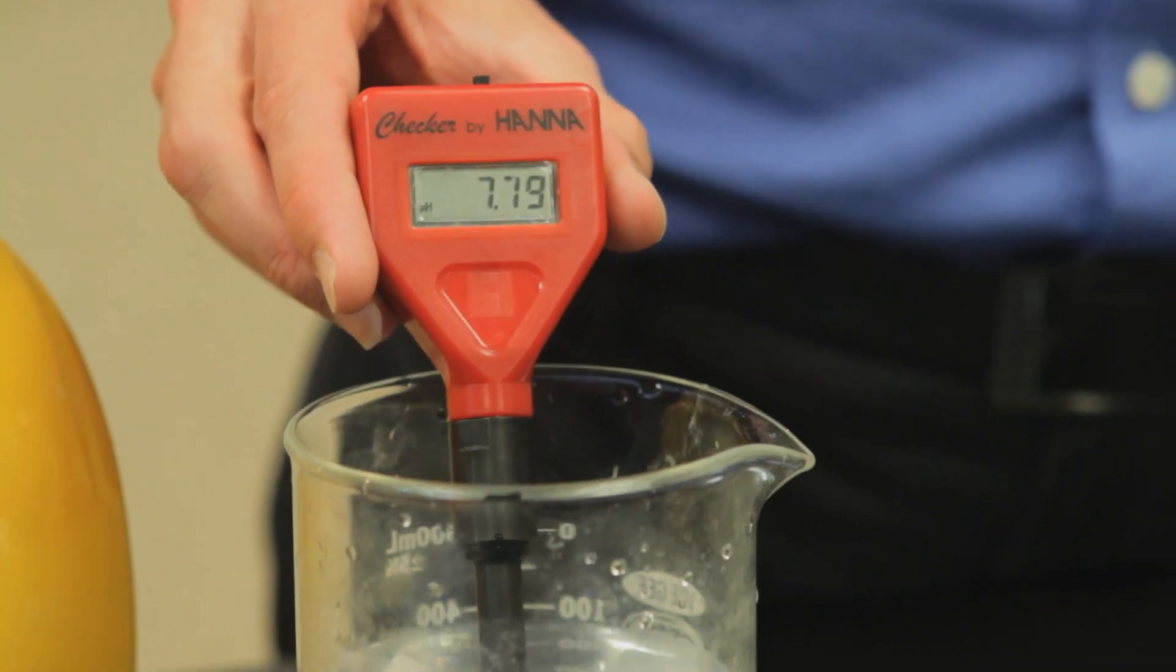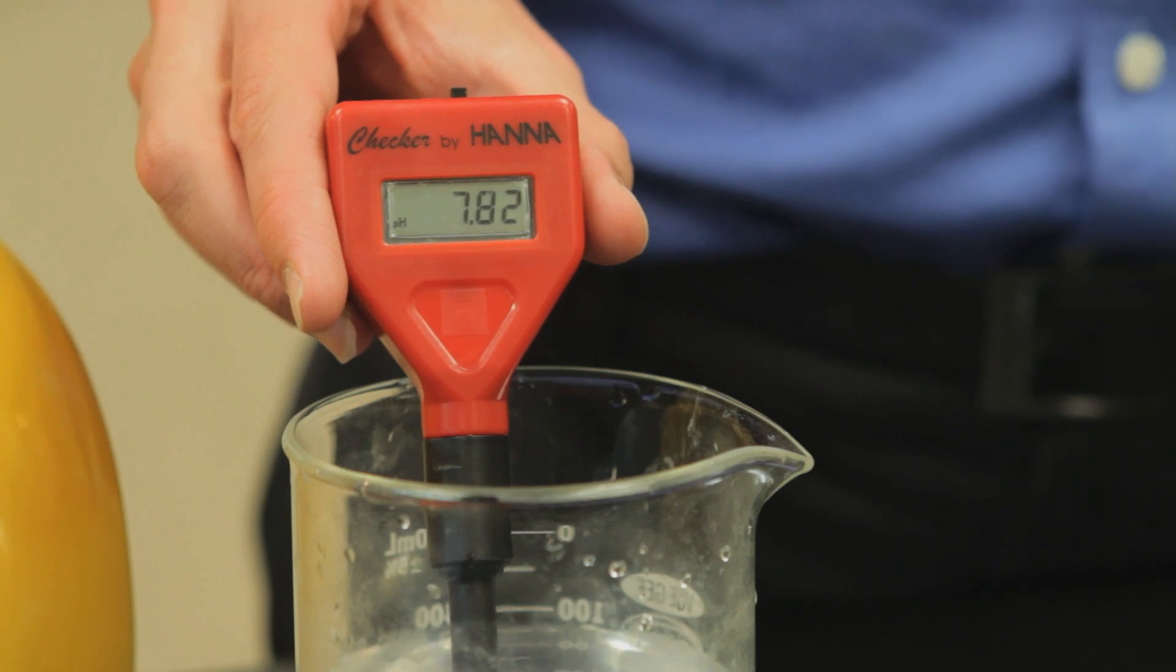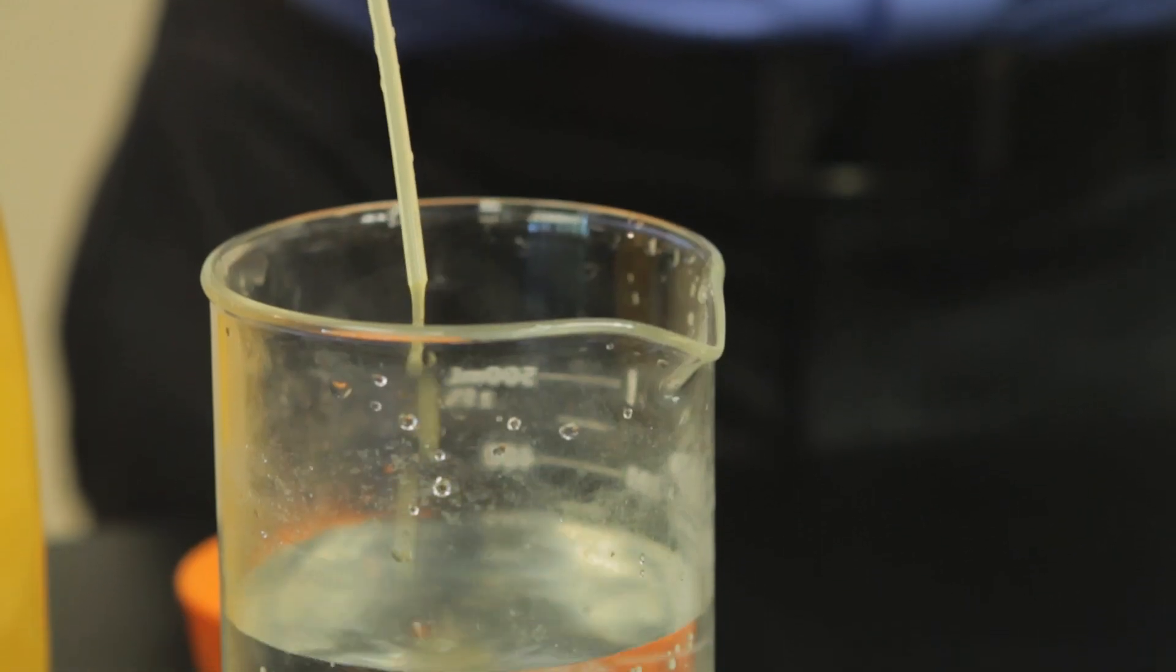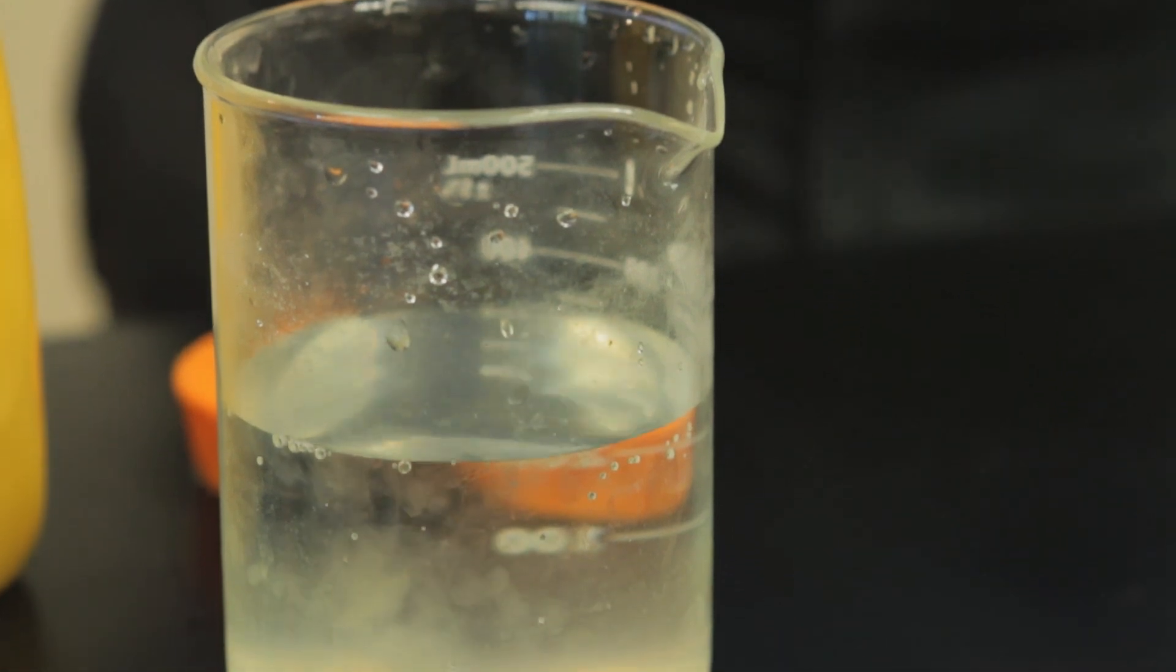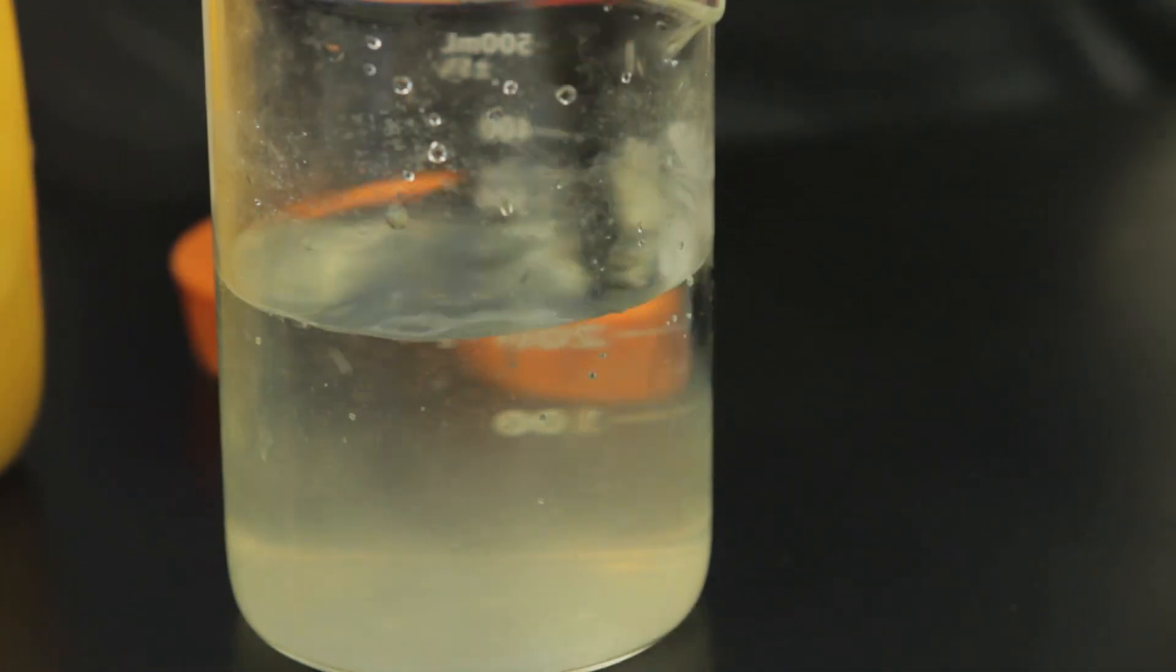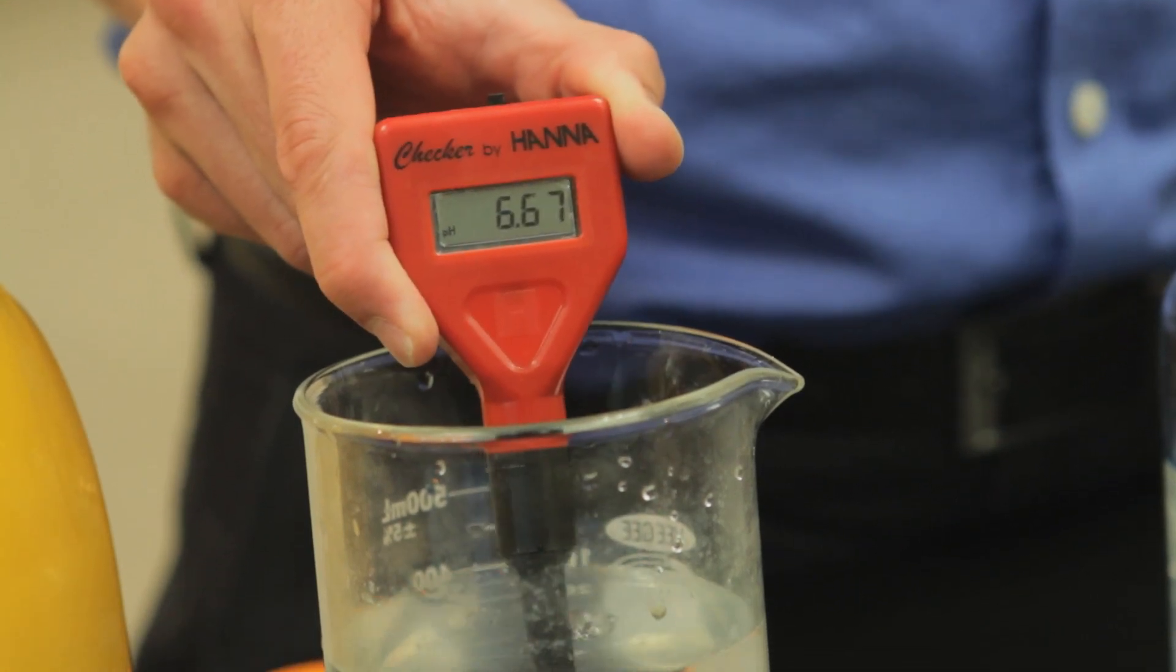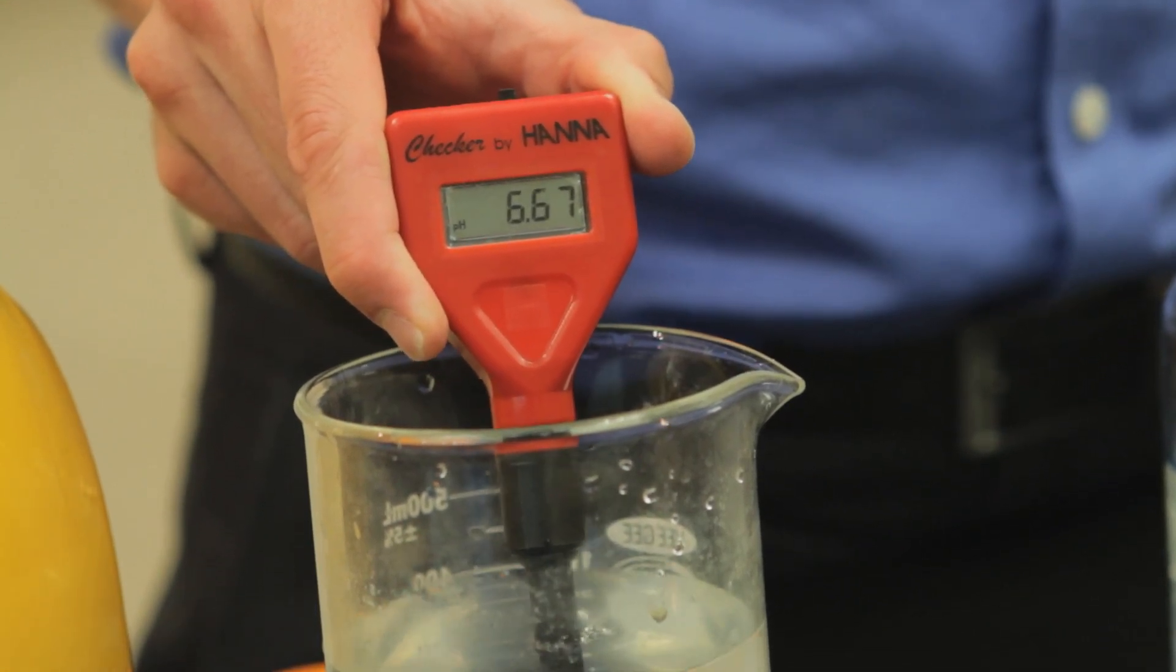I take a measurement of the pH of the regular water and I see that it is about 8, a little bit less. And now I'm going to add some orange juice and stir it. And I see the pH drops markedly down to about 6.6.